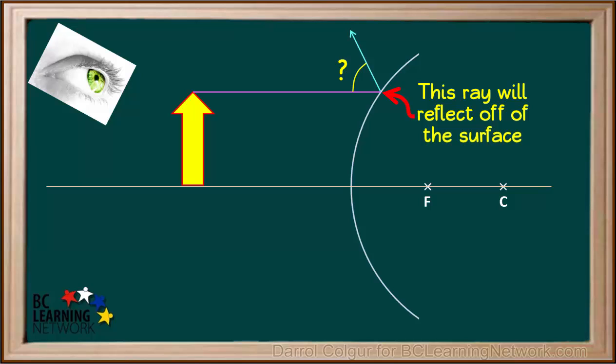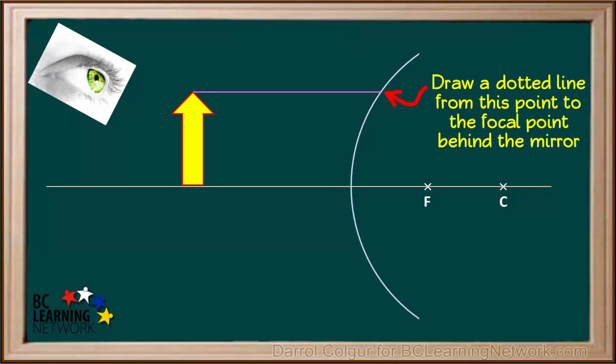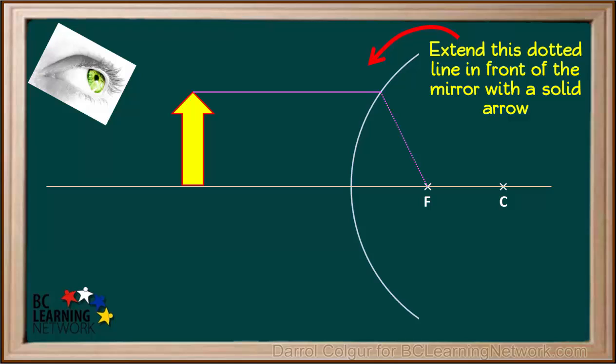This ray will reflect off of the surface of the mirror, but we don't know at what angle. To find out, we erase this arrow and draw a dotted line from this point to the focal point behind the mirror. The line is dotted because the rays don't actually travel through the mirror. Then we hold the ruler on the dotted line and extend it with a solid arrow in front of the mirror. This shows the angle at which this ray reflects from the surface.